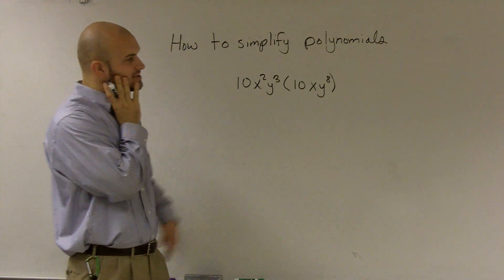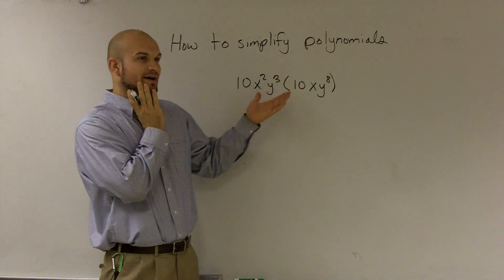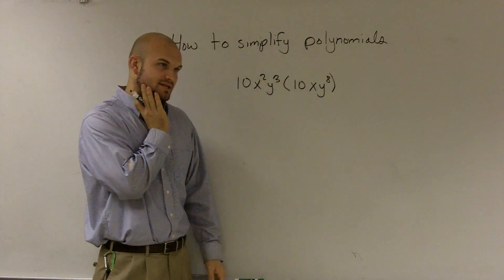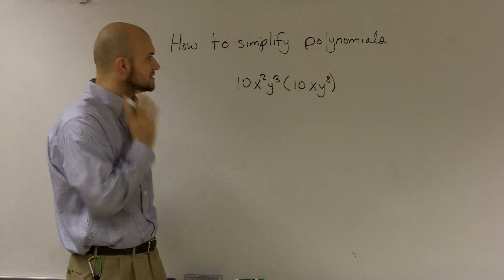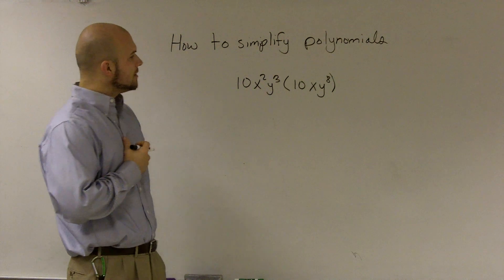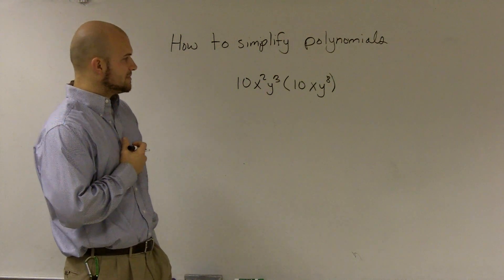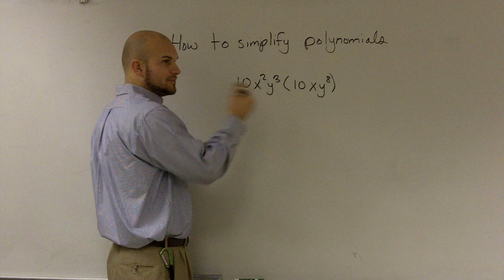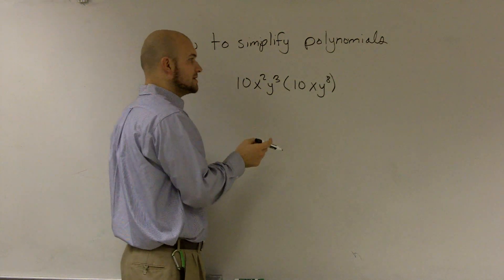So what we have to do is simplify this, and it has parentheses, so that means I'm going to have to use multiplication. When looking at this, one of the big mistakes that I see a lot of students do is they say, 'Oh well, I'm used to parentheses, I've got to use the distributive property.'